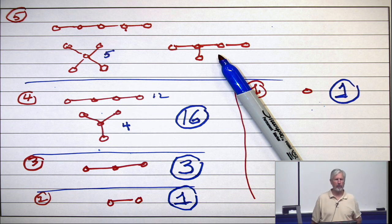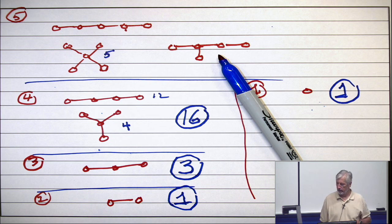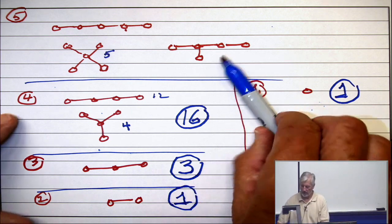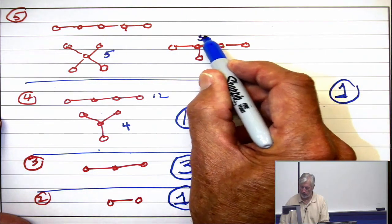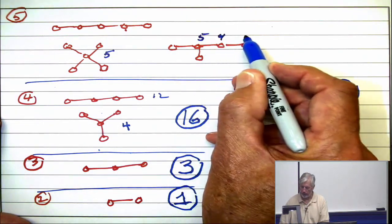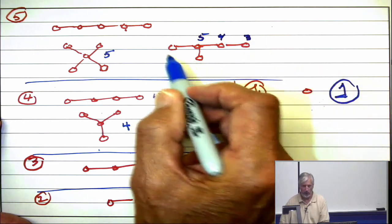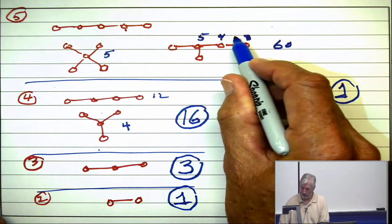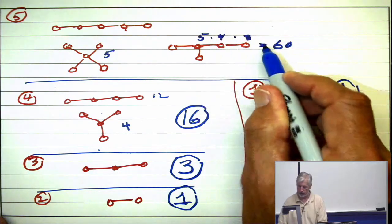How do you reason sixty? So, you reason five choices for that one, four choices for that one, three choices for that one, then the other two don't matter. So, that's sixty. So, it's that product, which is sixty. What about this one?